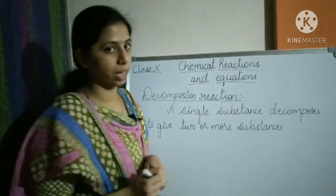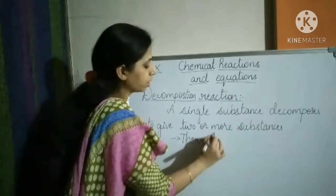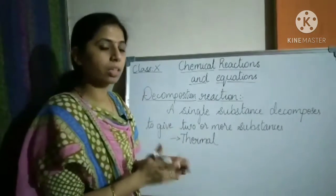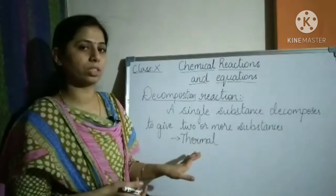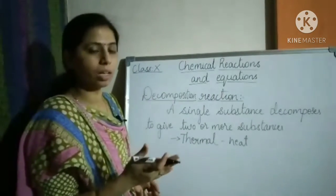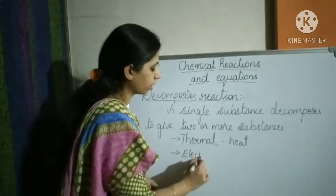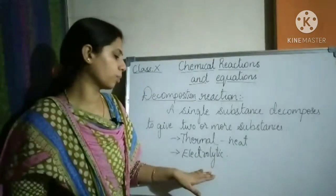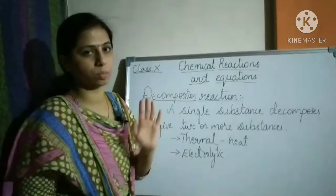Decomposition reaction is divided into three types. The first type is thermal decomposition. In thermal decomposition, the reactant breaks down using heat energy — heat is provided as the source of energy. The second type is electrolytic decomposition, where electric current is passed to cause the decomposition reaction, breaking down the reactant into products.